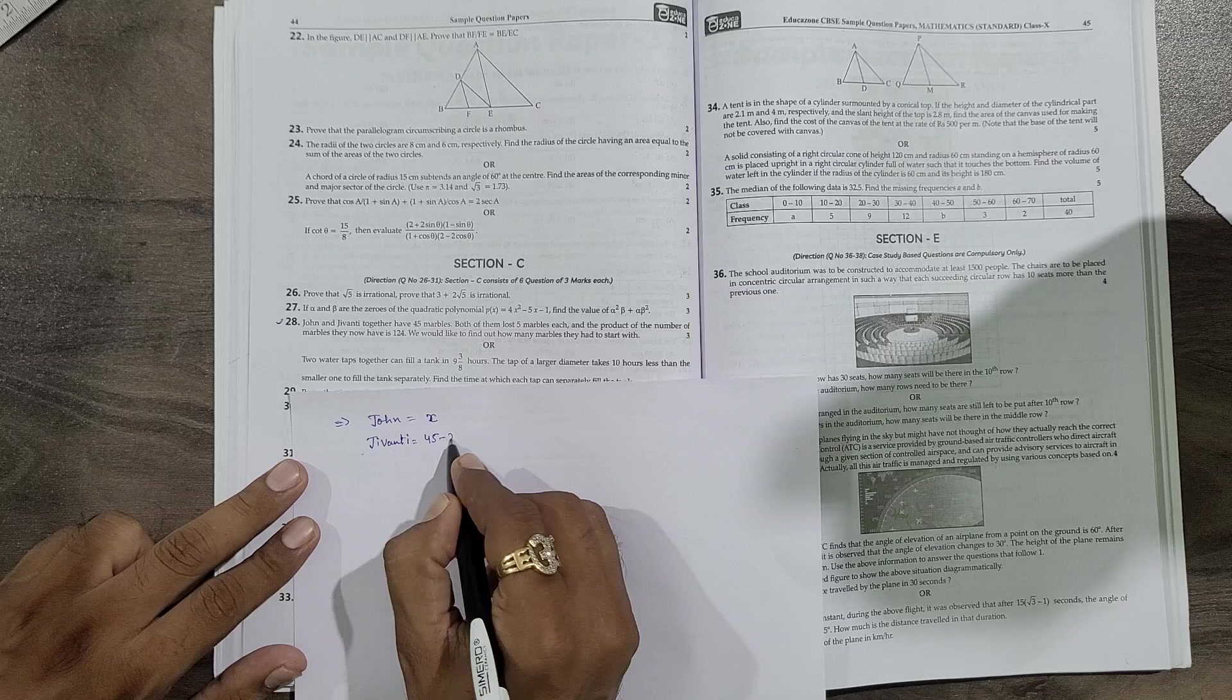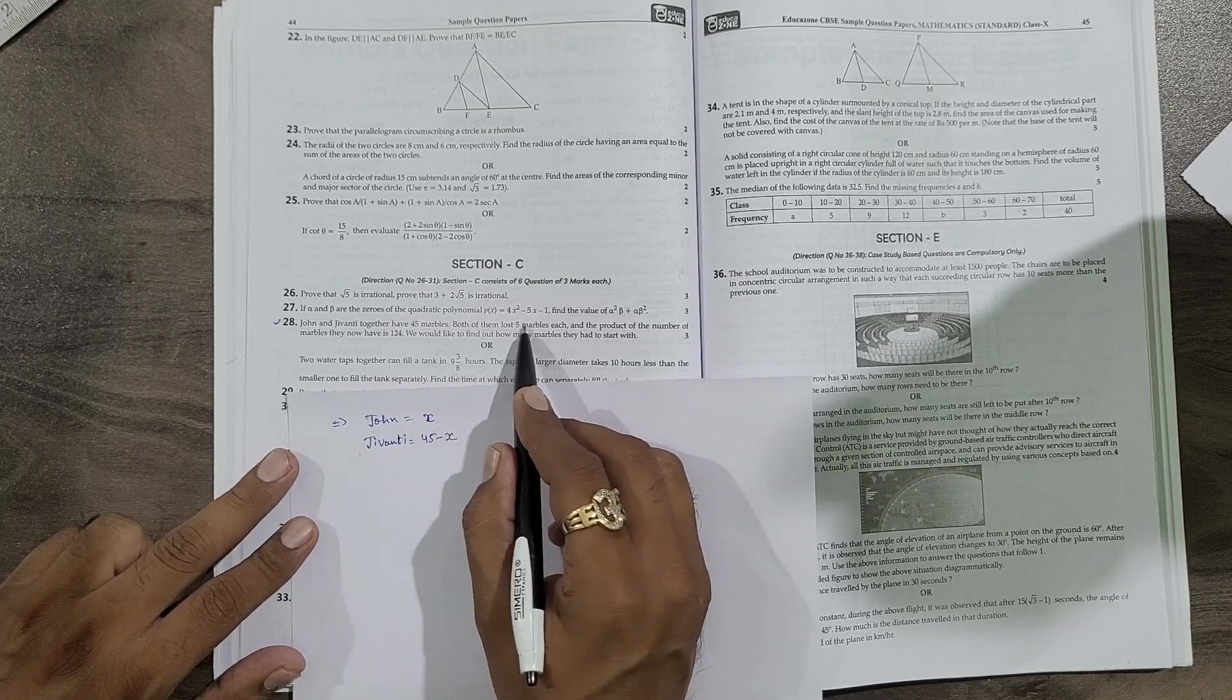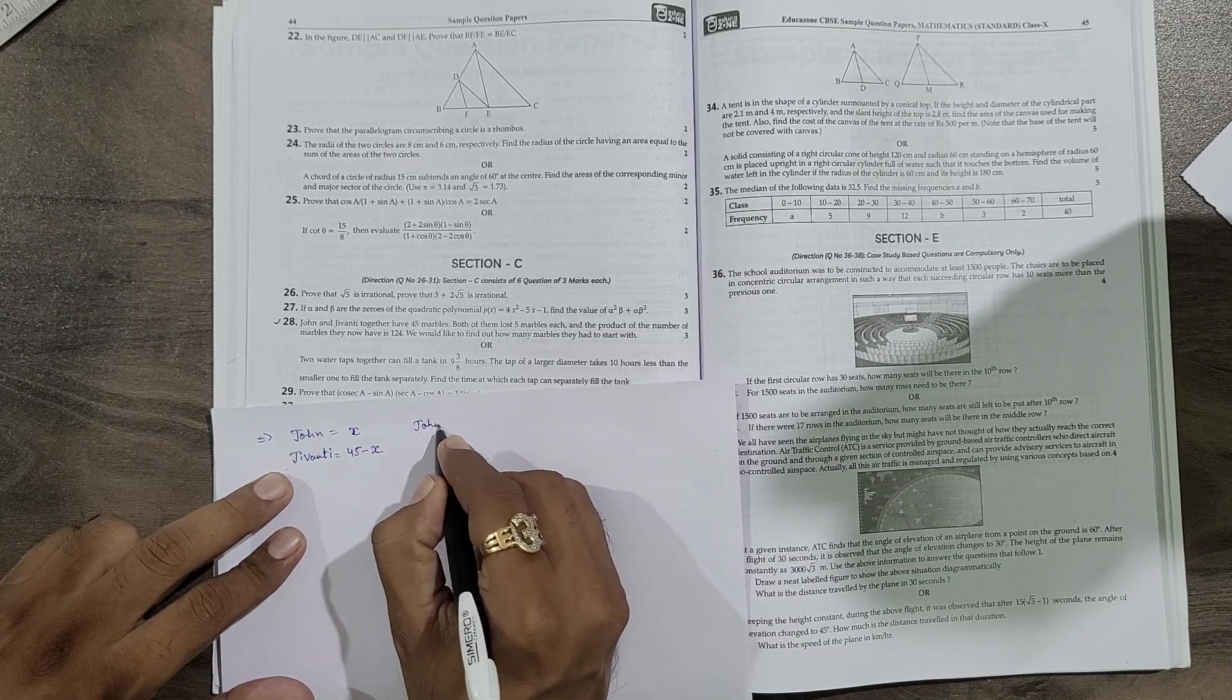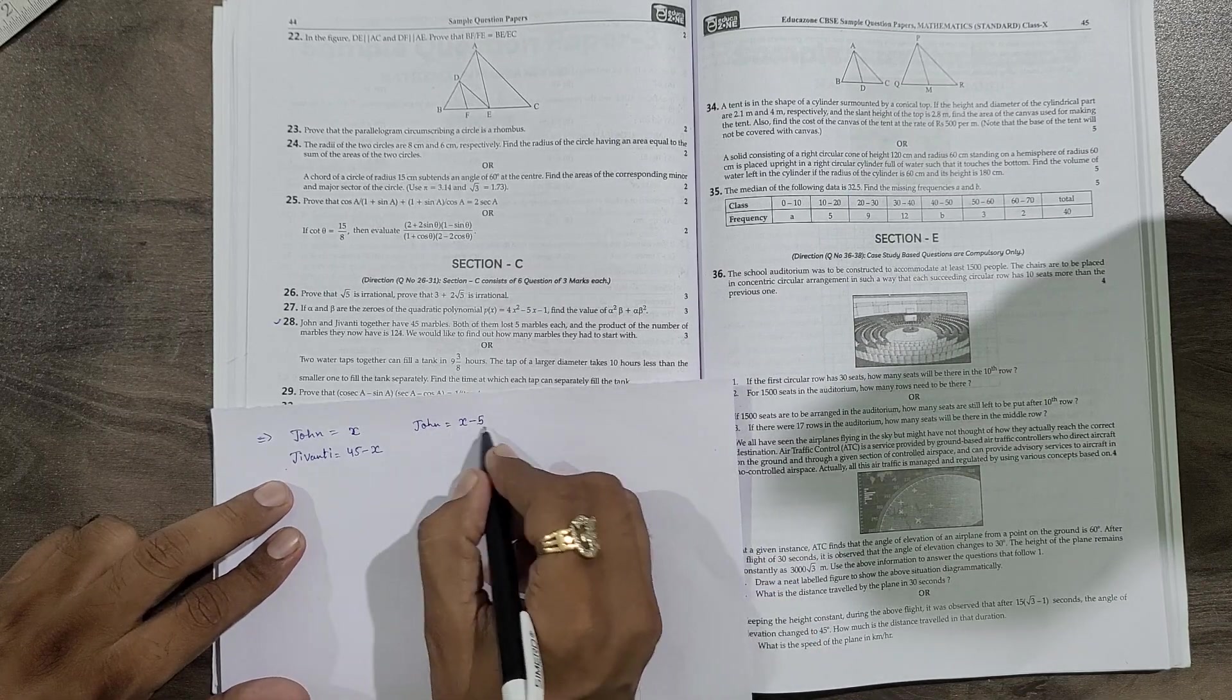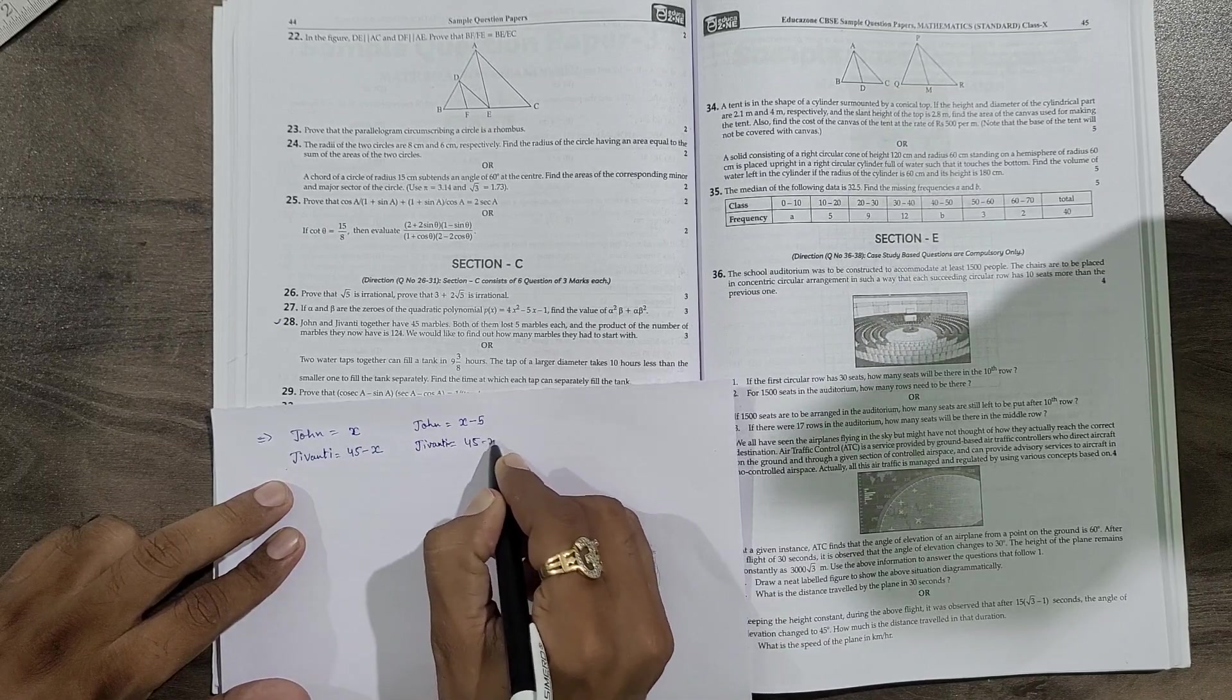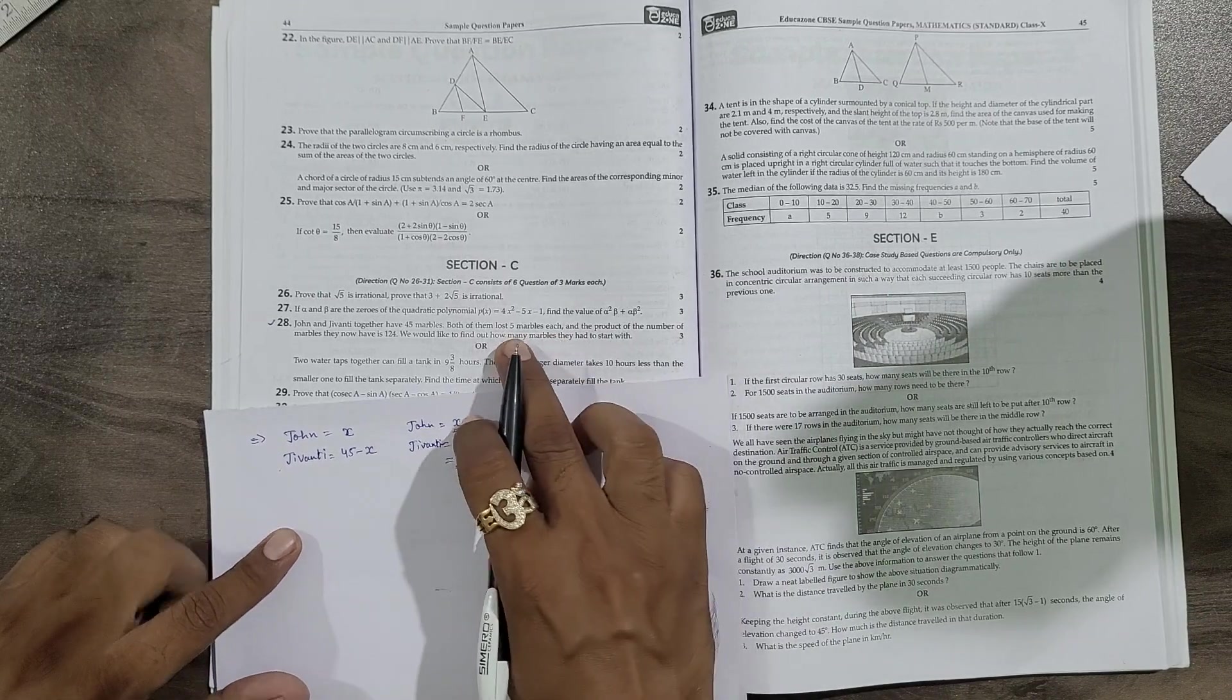So you will get number of marbles with Jivanti. Now both of them lost 5 marbles, means both of them lost. So now John will be having x minus 5 because he lost 5. Now Jivanti will have 45 minus x minus 5, that will be 40 minus x, because both of them lost 5 marbles.